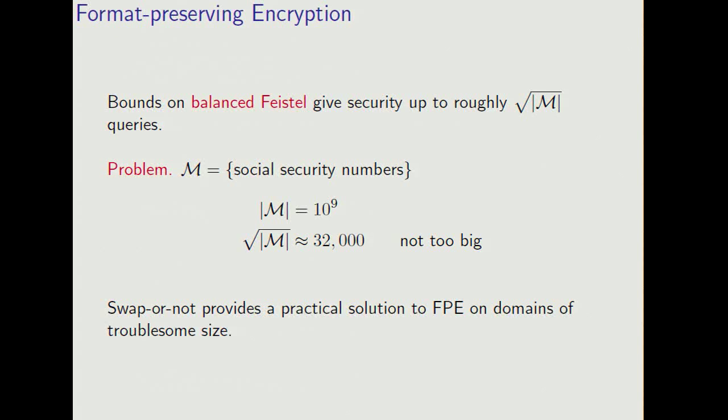A good example to consider is the case of social security numbers. So here the size is 10 to the 9th. That's large enough so that we wouldn't want to have to construct a random permutation using brute force. But the square root, that's the unbalanced Feistel, is only around 30,000, which is not so big. So swap-or-not provides a good solution to format-preserving encryption for these domains of troublesome size.